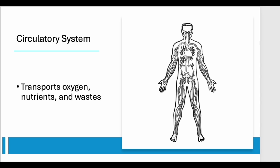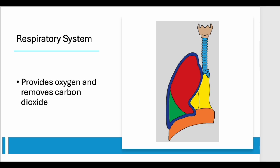To get that vital oxygen into our blood, we rely on the respiratory system. When we breathe in, air travels down our trachea into our lungs, where oxygen is exchanged for carbon dioxide in tiny air sacs called alveoli. Then, we breathe out the waste gas. It's a constant exchange that keeps us going.